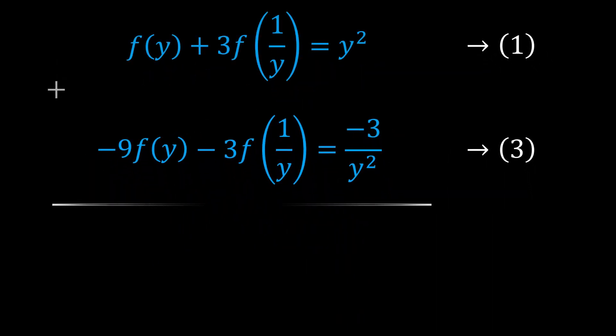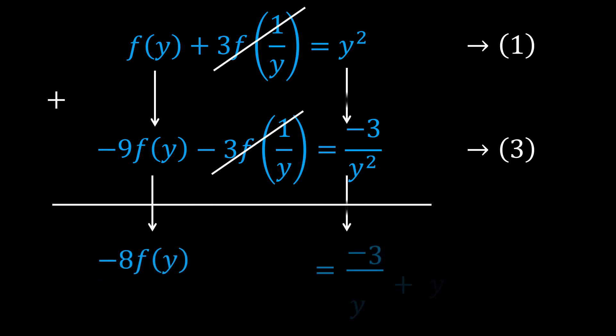Adding the resulted equation to the first one yields -8f(y) on the left-hand side and -3/y² + y² on the right-hand side.